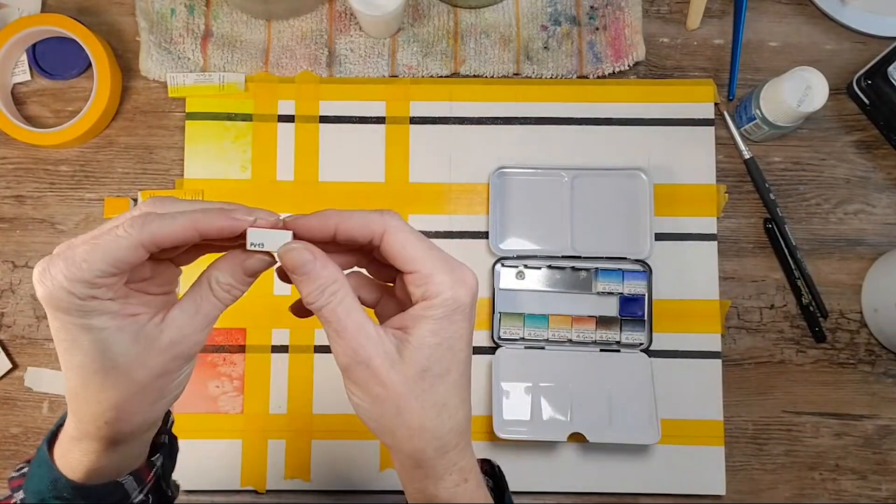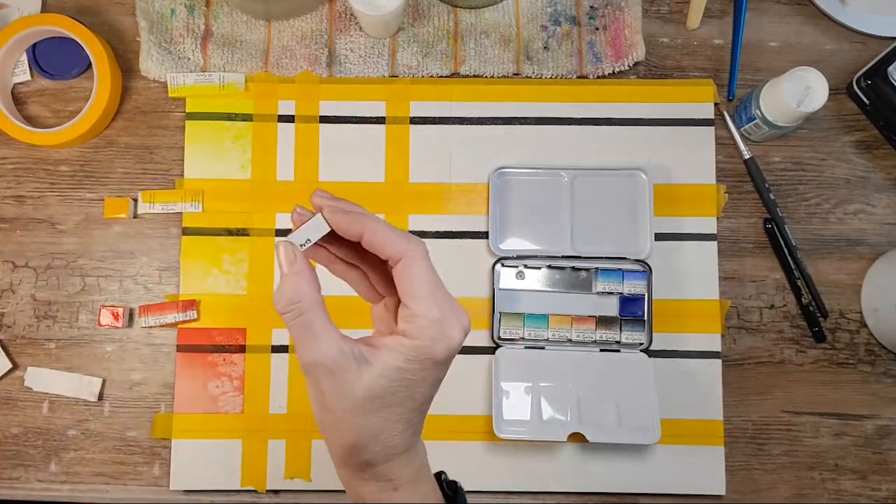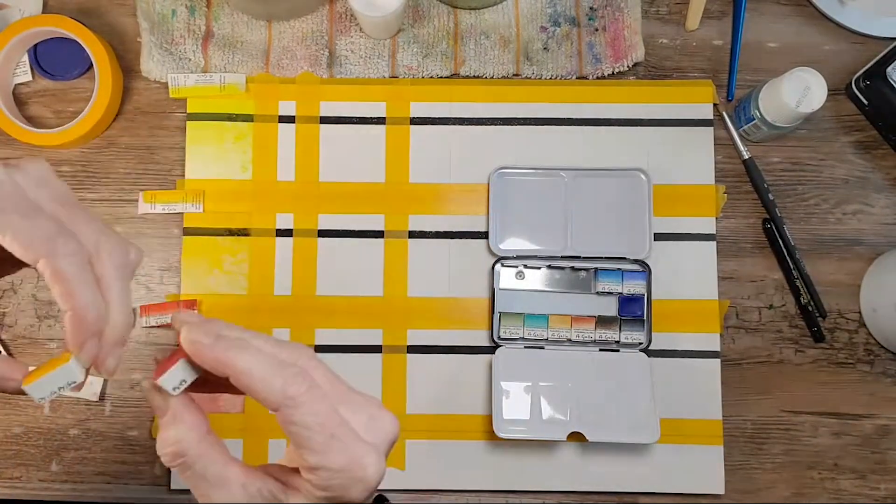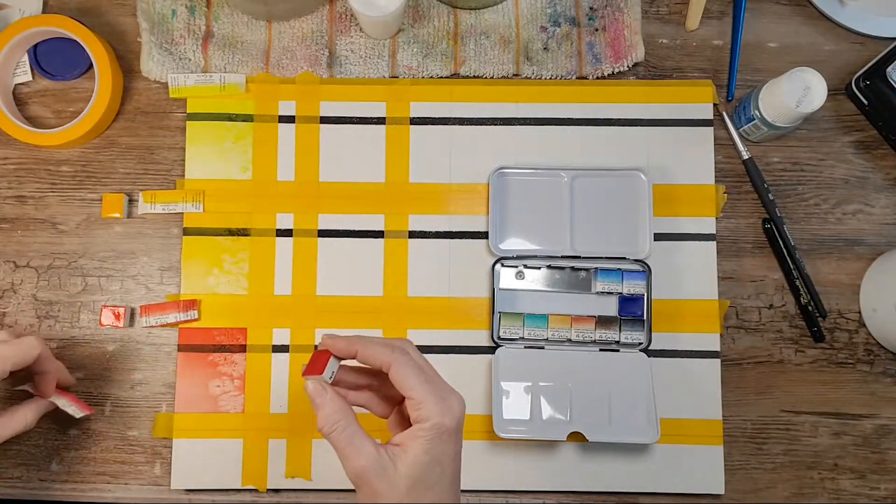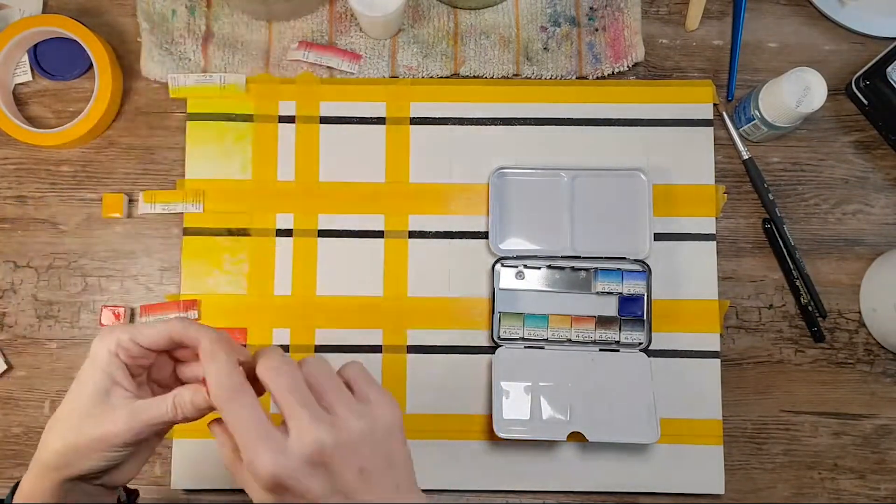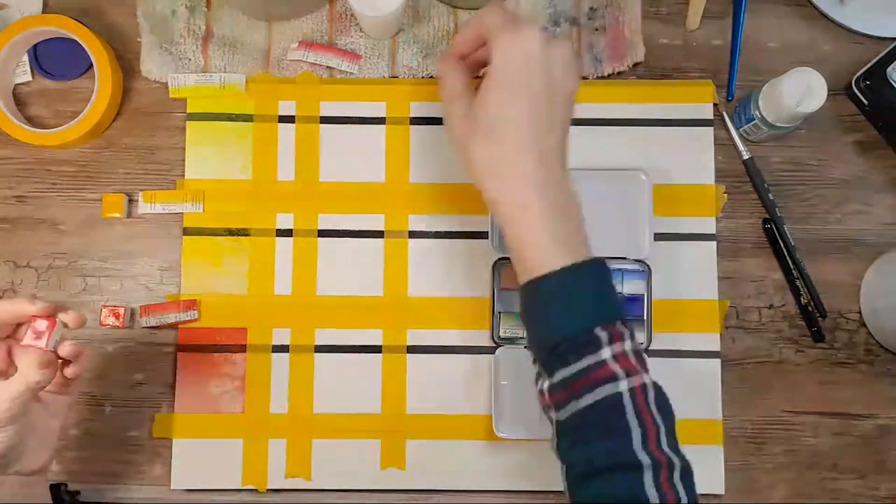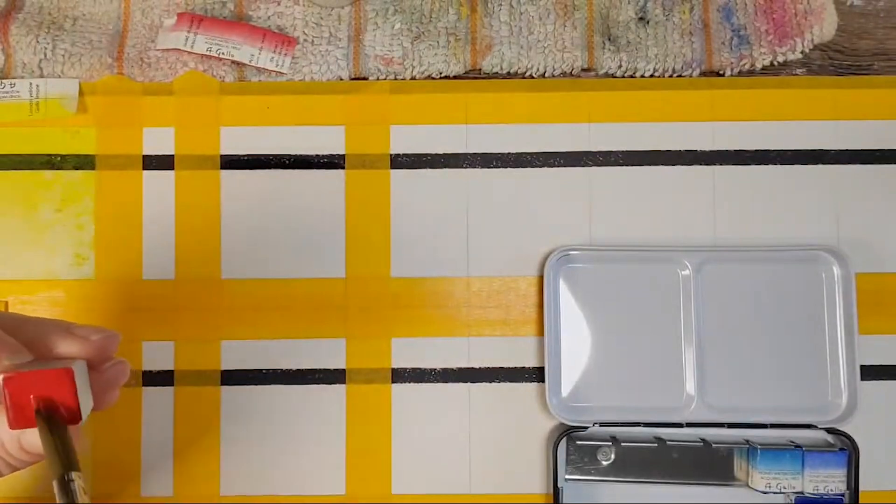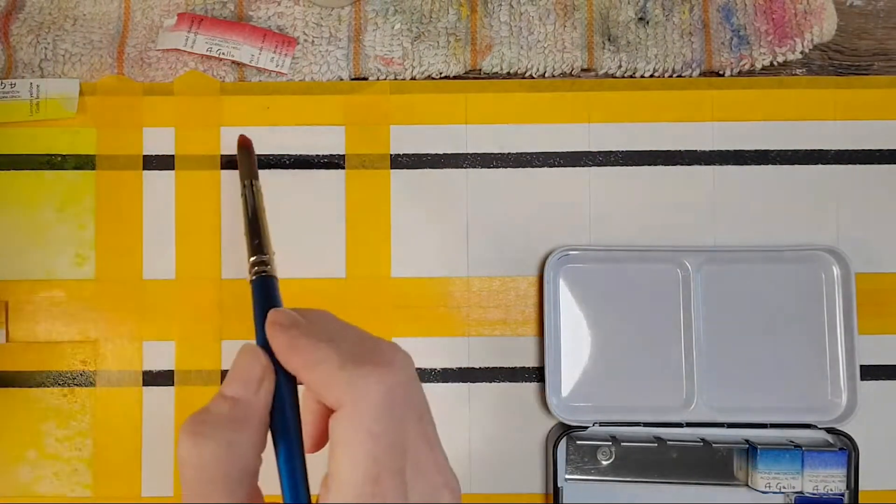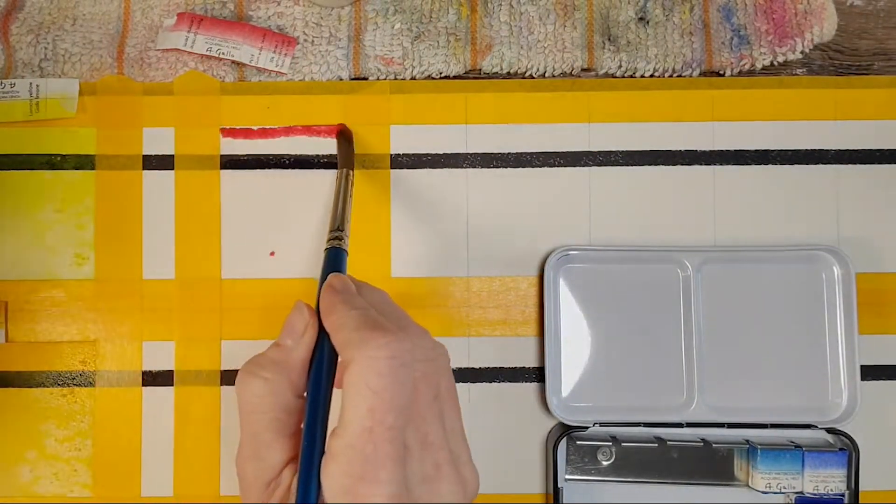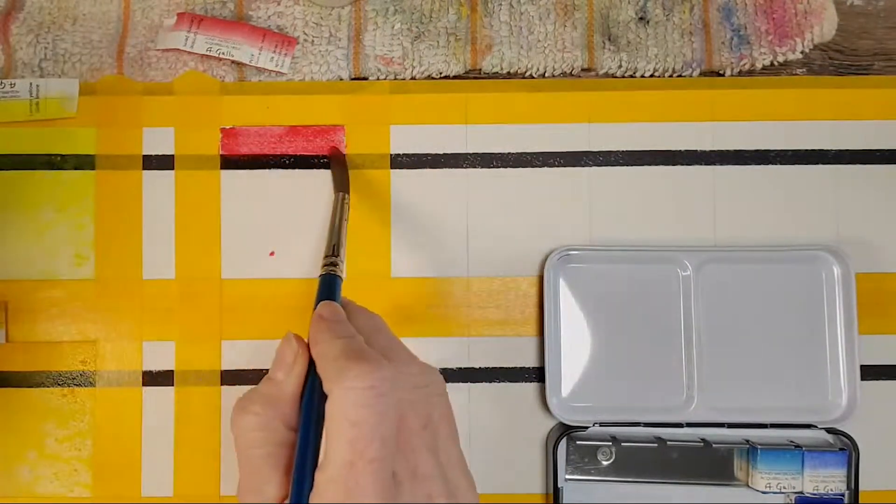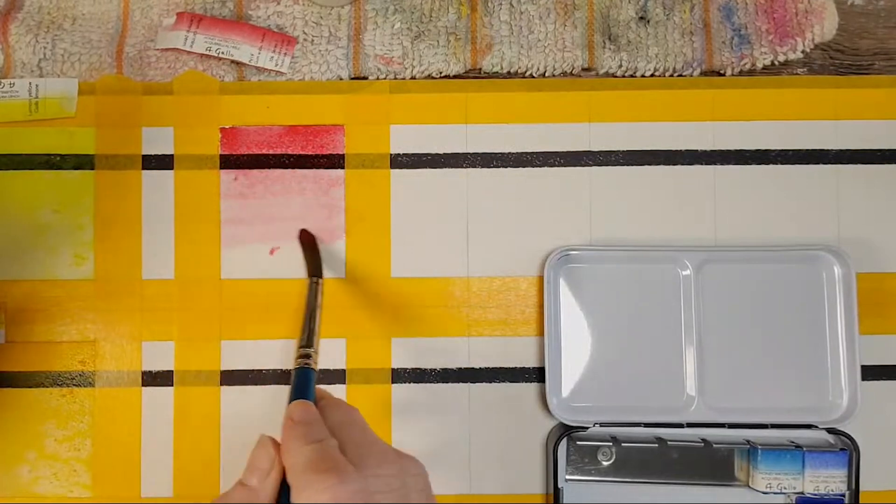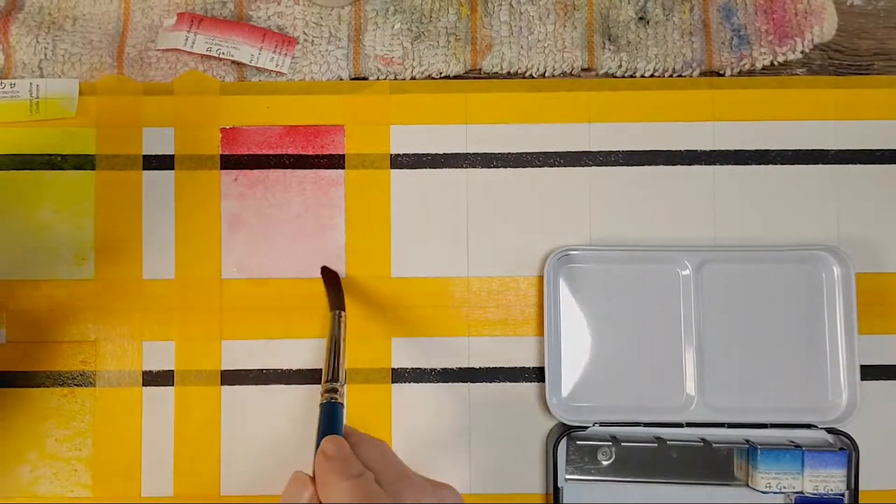Permanent Carmine PV19. These have the labeling on them for the pigment. It looks handwritten too. That's a lot of work for them to do. So you won't get confused about the pigment at least that you have on your paper or in your pan. That's so pretty.